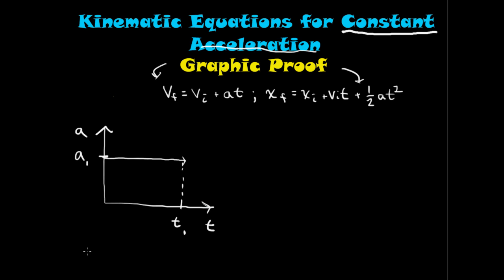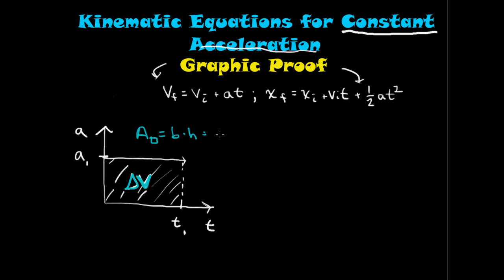Something pretty interesting about this is that underneath this line, this area, is your change in velocity. You may be wondering why. Well, consider just the units. Let's say time is in seconds and acceleration is in meters per second squared. If I calculate the area of this rectangle — base times height, which is acceleration times time — the seconds cancel and you're left with meters per second, which is a velocity. This turns out to be the change in velocity over that time interval.